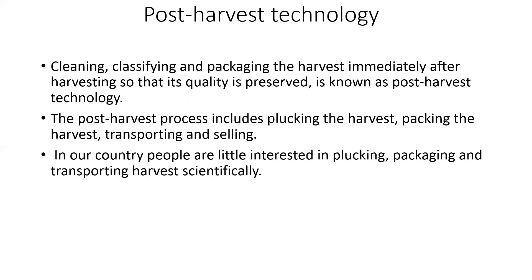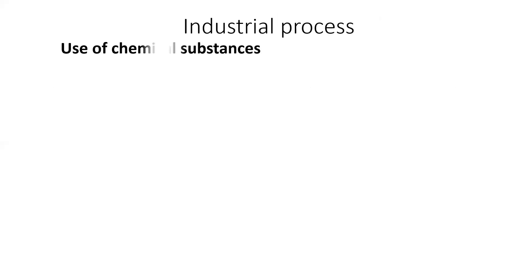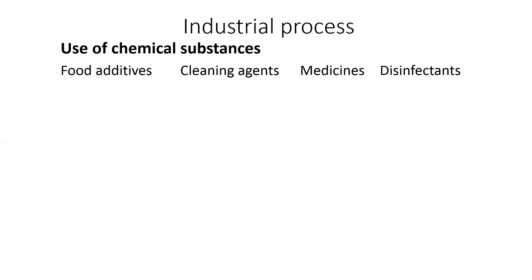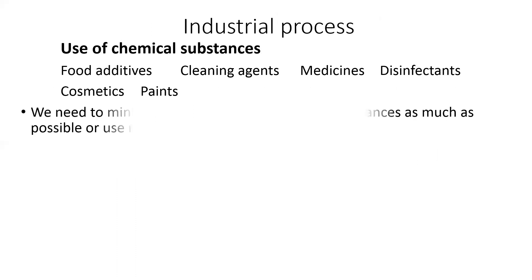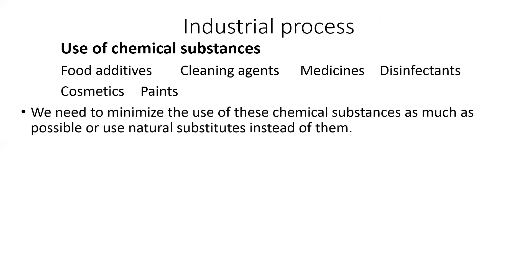In our country, people are little interested in plucking, packaging, and transporting the harvest scientifically. Industrial processes use chemical substances including food additives, cleaning agents, medicines, disinfectants, cosmetics, and paints. We need to minimize the use of these chemical substances as much as possible or use natural substitutes instead of them.